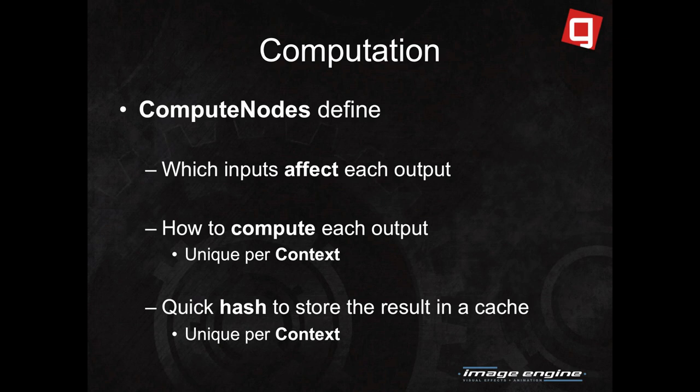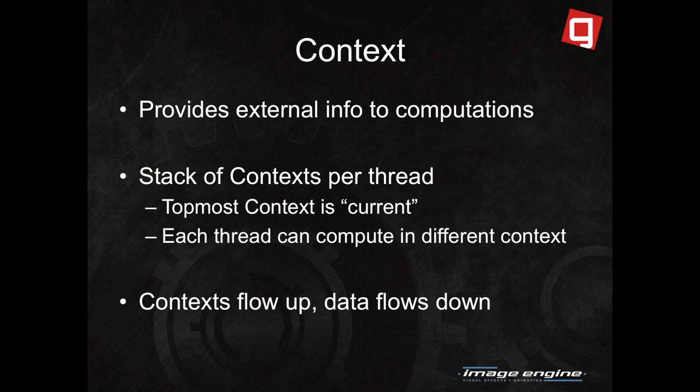Both the hash and the compute are performed relative to a unique context. Contexts are the key to parallel processing in Gaffer — each thread can make its own context. So even though all threads are accessing the same graph, they can be computing different results for different points in time. Beyond time, contexts also provide completely arbitrary keys that can change, and we exploit that to enable multi-threaded image and scene processing.